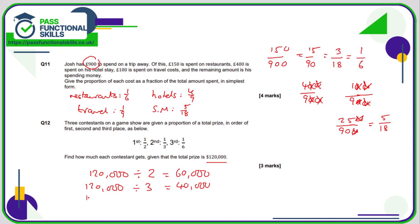And 120,000 divided by six because it's a sixth of the amount. 12 divided by six is two, so 120 divided by six is 20. That's going to be 20,000.